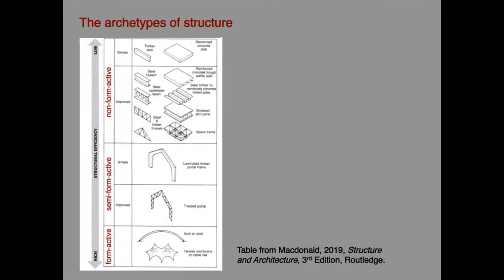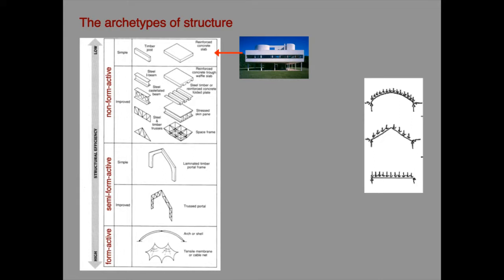A table shows a selection of structural elements arranged in accordance with this classification. The left-hand column gives structural archetype; efficiency increases from the top to the bottom of the table. Any structure may be placed somewhere in the table according to archetype, and its position gives an indication of its likely efficiency. The Villa Savoie, with its non-form active structure, is placed at the top — the least efficient end. The CNIT shell, one of the most efficient structures ever built due to its form active structure, comes at the bottom.